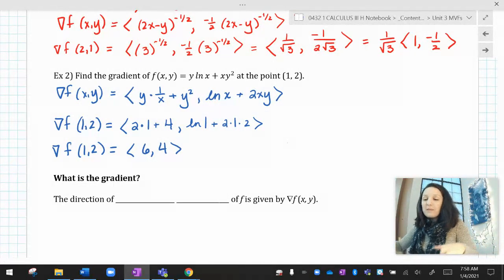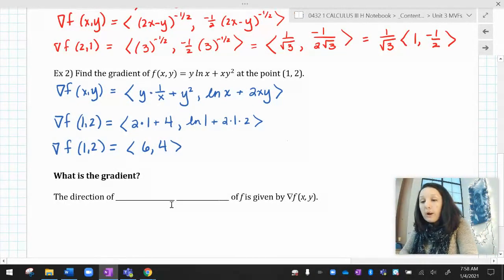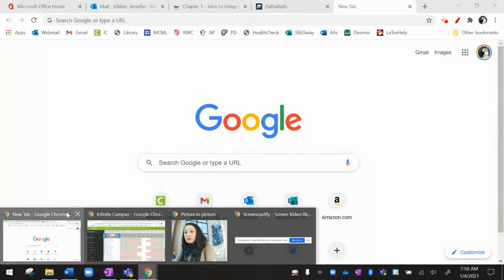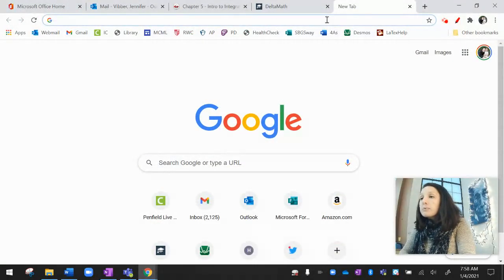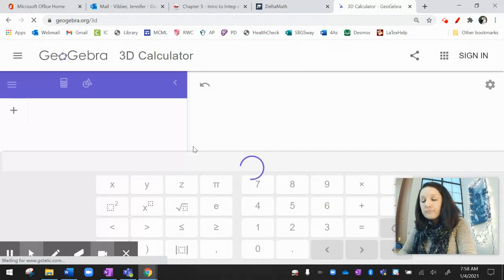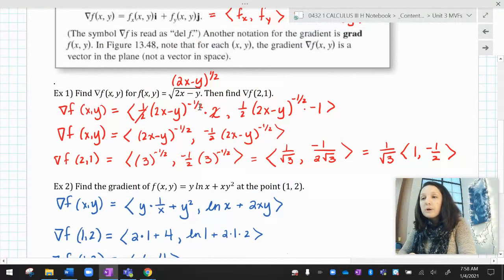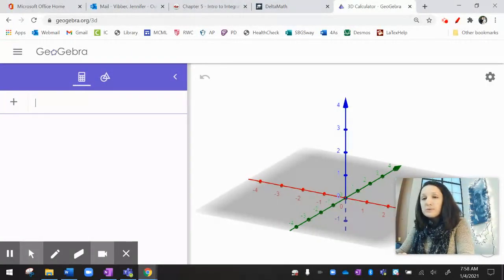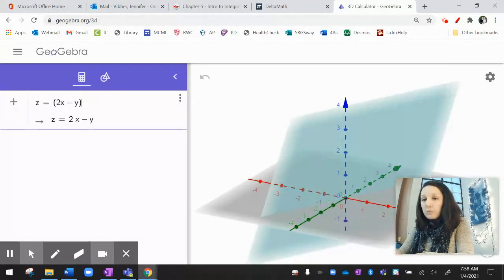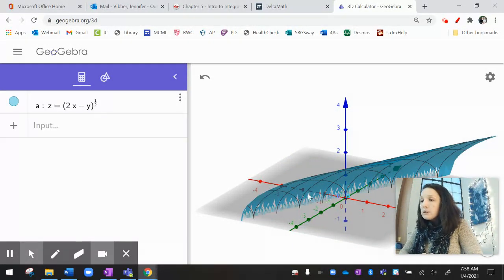What is that though? And to answer that question, before I do it and just hand you the answer, we are going to pull up some 3D graphs. So let me pull up GeoGebra here. And I am going to graph that first function, radical 2x minus y.